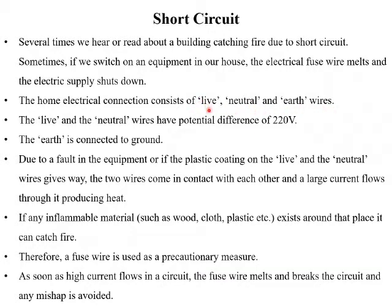The live wire is the positively charged wire. The neutral one is the negatively charged wire. The earth wire refers to the earthing which is done. Now you must have seen three-pin plugs in your home — one pin is for live, another for neutral, and the third one is for earth. We generally have three-pin plugs for appliances which function on high electrical energy or those that draw more electric current.